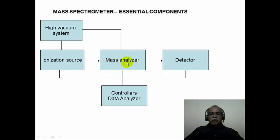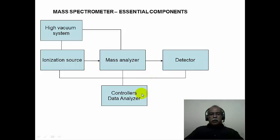There are several different types of mass analyzers available. The mass analyzer essentially separates ions of different masses and segregates them based on their mass-to-charge ratio. The ions thus separated are fed into the detector, which detects them and puts out a signal recorded as a mass spectrum. The whole system is controlled by computers and microprocessors, which form the data analyzer part of the mass spectrometer.